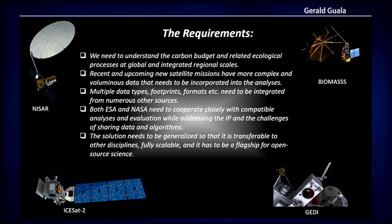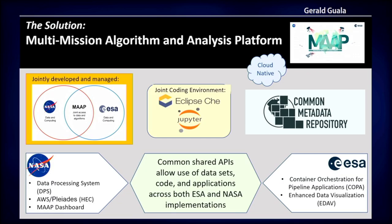So we need a collaborative environment. We need to get the processing next to the data, and we need to be able to program together and share algorithms — that's the solution: MAP. It's a joint coding environment. You log in, you get your environment, and all your libraries are updated. You have a chat and collaborative coding environment. There's a common metadata repository so that everyone addresses the data the same way. It's all in the cloud and uses common APIs.